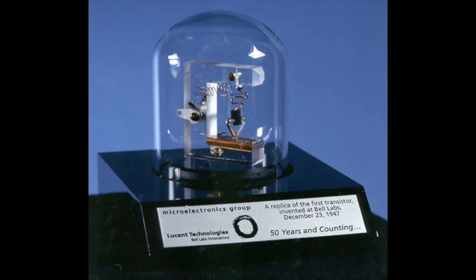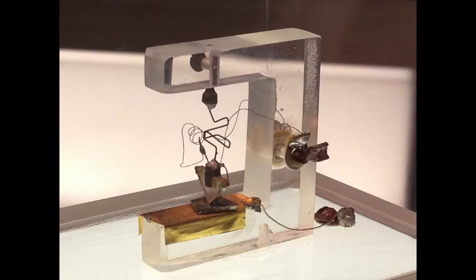On December 23 in the year 1947, Walter Brattain and John Bardeen demonstrated the amplifying action of the first transistor in the Bell Telephone Laboratories. The advantages of this three-terminal electronic device are as shown.